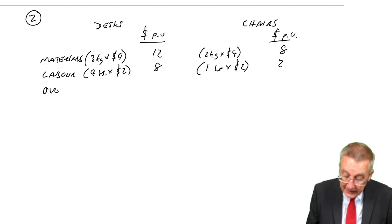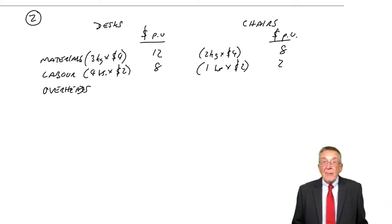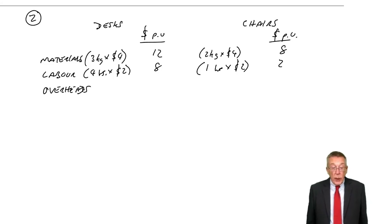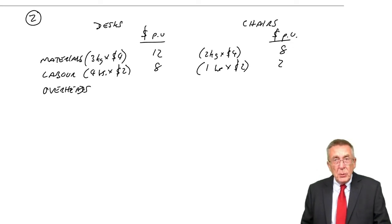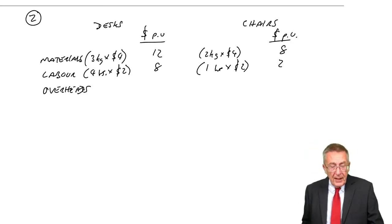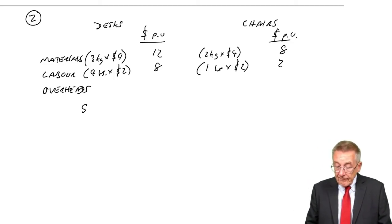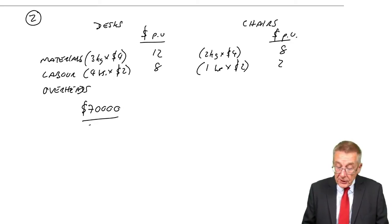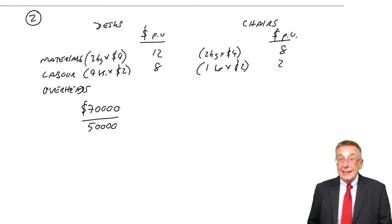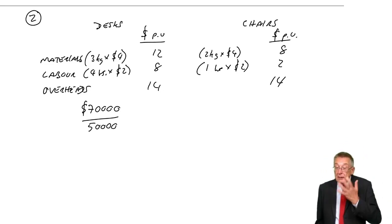However, what about the overheads? Remember, they're both produced in the same factory. It says the total is $700,000. We are going to produce in total 50,000 units, 30,000 desks, 20,000 chairs. What we could do, but don't copy this down, you could do what we did before and say, okay, in total we're spending $700,000. In total, 30 plus 20, we're producing 50,000 units, and therefore each unit, desks, chairs, is costing $14.